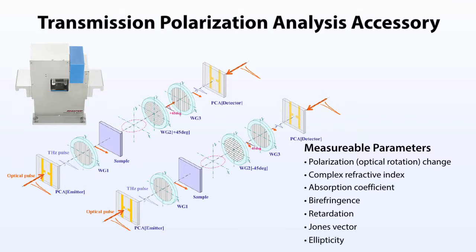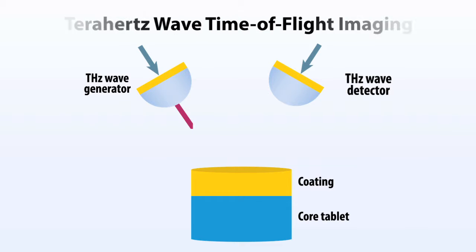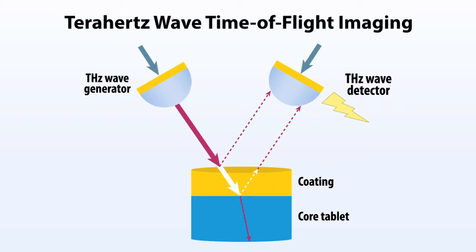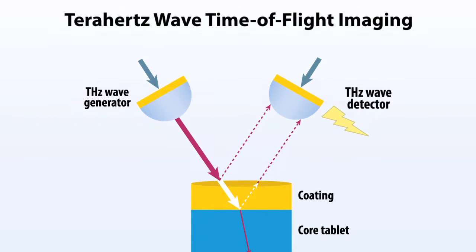Polarization studies can provide information on the chiral purity of enantiomers and the optical anisotropies of crystalline materials. Terahertz radiation is partially reflected at interfaces where there is a change of refractive index, but passes in straight lines through pharmaceutical materials. This combination is what makes it possible to measure coating thickness without calibration, as required by other spectroscopic techniques.